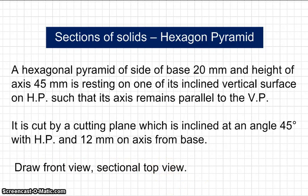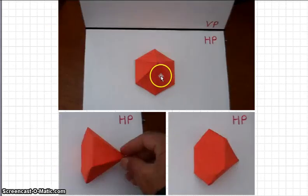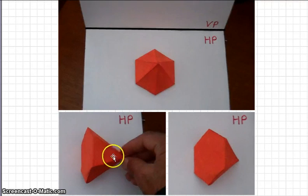Now to visualize this one, this is the hexagonal pyramid here, and then it is sitting on one of these vertical faces. You hold the tip and let it form. Now it is resting on this vertical face here, this one.